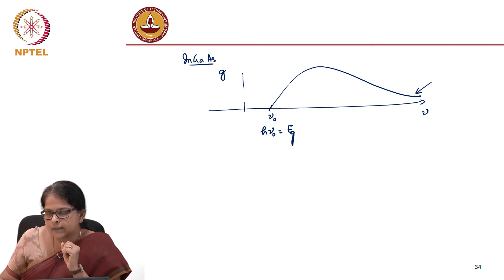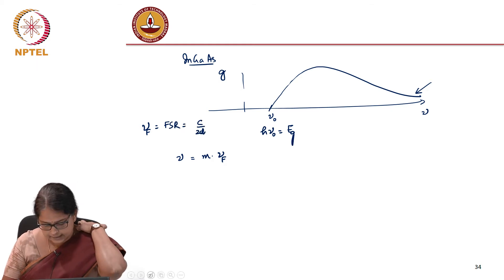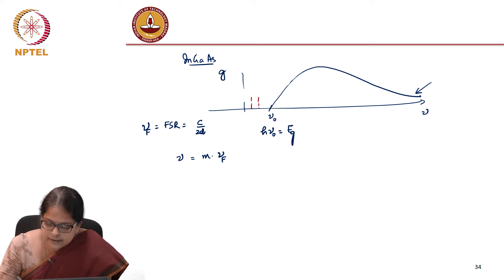Now how does this matter in laser? We know that only those frequencies which are m times, which correspond to m times the FSR, νF is your FSR which is c/2d. So in this axis, I can now mark lines that are separated by the free spectral range. These are the frequencies that are allowed by the cavity once you have formed the cavity.